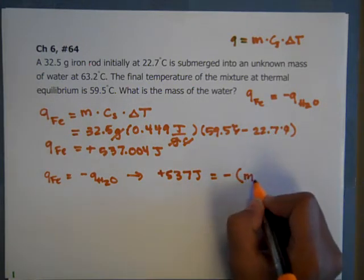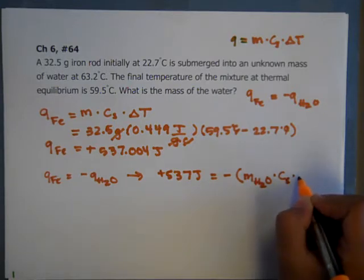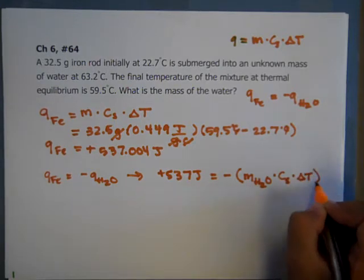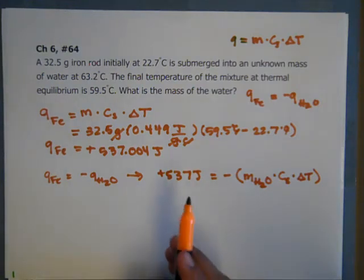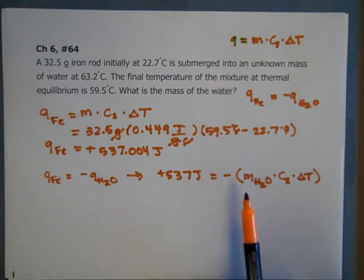which is going to be M of water, which is what we're looking for, C of water times delta T of water. And now we have, lucky for us, one equation, one unknown. So we can solve it from this equation.